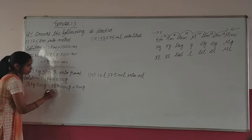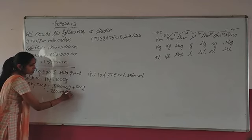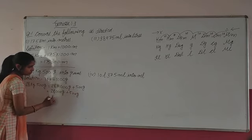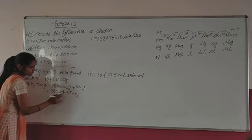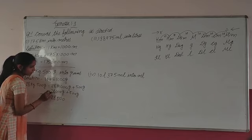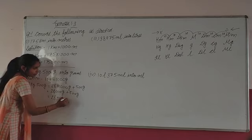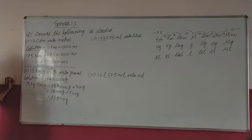So kilogram ko 1,000 se multiply kar denge, to ye gram ban jayega, plus 500 gram. Kyunki jo 28 kilogram 500 gram hai, isko hum likh sakte hain: 28 kilogram plus 500 gram. To kya aagaya hamara? 28,000 gram plus 500 gram. Dono ko add karo: 28,500 grams. That is the answer. Clear hai?